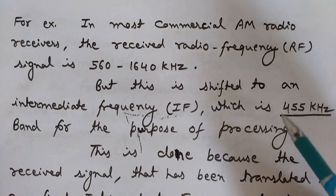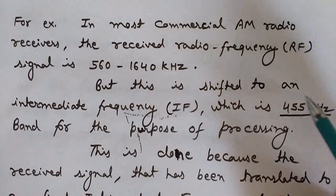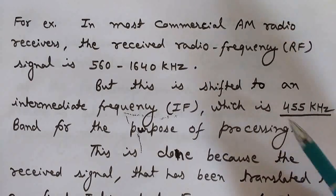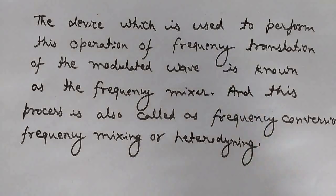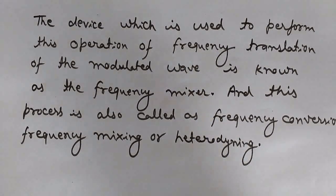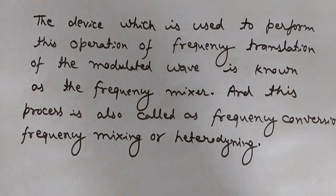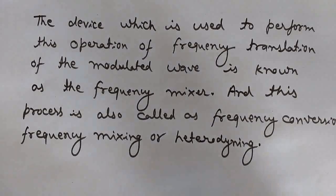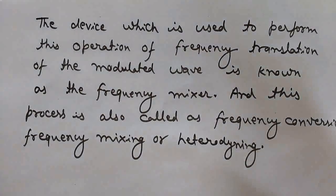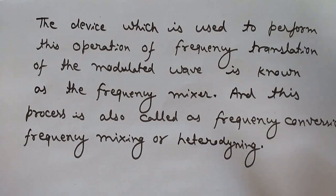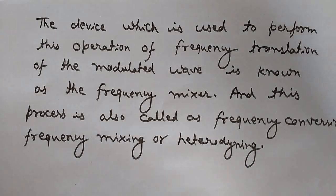In commercial AM radio, the fixed intermediate frequency used is 455 kilohertz. After this translation of frequency to the intermediate frequency, all processings on the signal are performed, and it becomes easier to process the signal at this fixed frequency. The device used to perform this operation of frequency mixing or frequency translation is known as a frequency mixer, and this process is known as frequency conversion, frequency mixing, or heterodyning — all these names mean the same thing. Frequency mixing is simply shifting a modulated signal before demodulation to another frequency band so that it can easily be amplified, filtered, or demodulated.